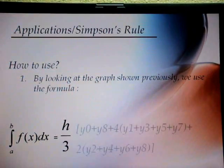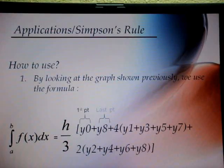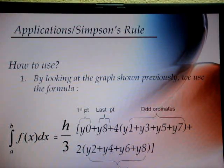How to use? By looking at the graph shown previously, we use the formula as shown below. By integrating f(x) dx from a to b, it gives us this formula which is approximately equal to h over 3, multiplying y0 plus y8 plus 4 multiplied by y1 plus y3 plus y5 plus y7, close bracket, plus 2 multiplied by y2 plus y4 plus y6 plus y8.